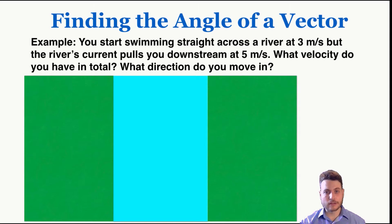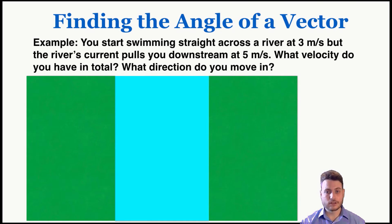Here's a real-world example of using vector angles to solve problems. You start swimming straight across a river at 3 meters per second, but the river's current pulls you downstream at 5 meters per second. What velocity do you have in total and what direction do you move in?